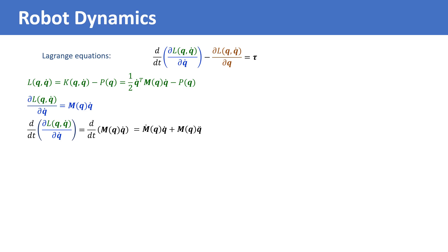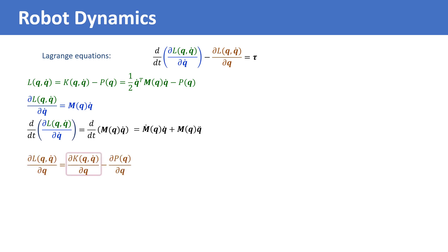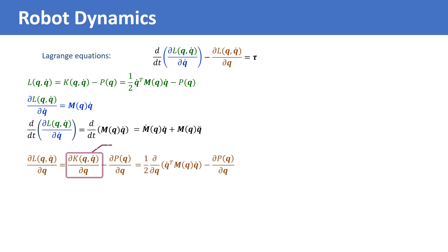We have now calculated the first term on the left-hand side of the Lagrangian equations. To find the second term, we take the partial derivative of the Lagrangian with respect to q, which equals the partial of the kinetic energy with respect to q minus the partial of the potential energy with respect to q. This can be written in the form shown, since the kinetic energy equals one-half q-dot transpose m of q times q-dot.